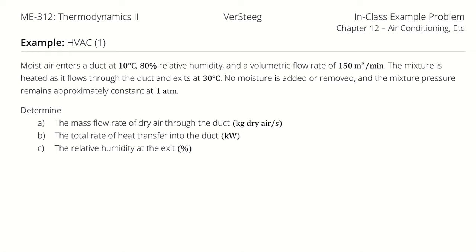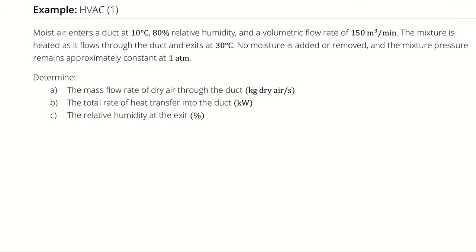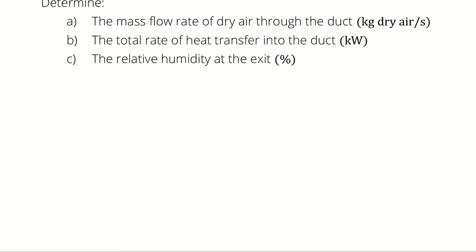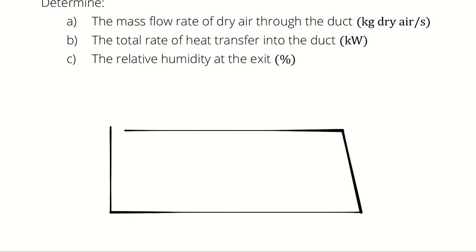Moist air enters a duct at 10 degrees Celsius, 80% relative humidity, and a volumetric flow rate of 150 cubic meters per minute. The mixture is heated as it flows through the duct and exits at 30 degrees Celsius. No moisture is added nor removed and the mixture pressure remains approximately constant at 1 atmosphere. Determine the mass flow rate of dry air through the duct, the total rate of heat transfer into the duct, and the relative humidity at the exit.